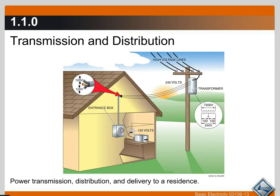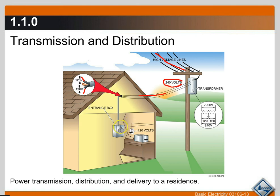Once the high voltage lines come into the transformer out there on the pole, it steps the voltage down to 240 volts. Then it feeds through our service line into the house on two wires — 120 volts on one wire and a different phase of 120 on another. Don't worry about phases right now; just know that it comes in on two lines of 120 each into the entrance box, and then it's distributed throughout the home to the outlets.